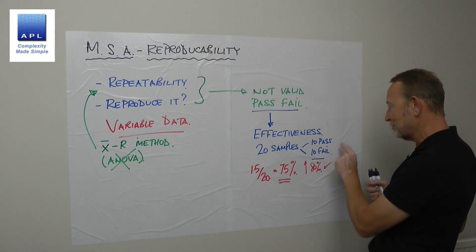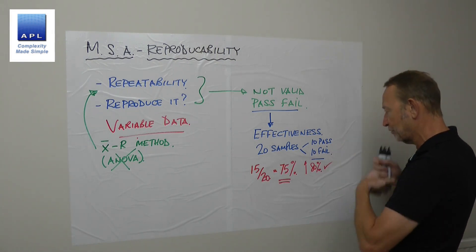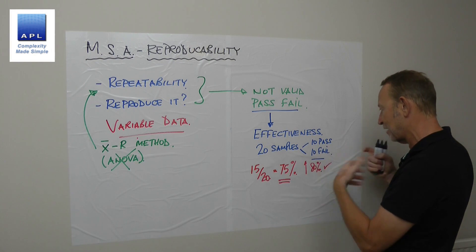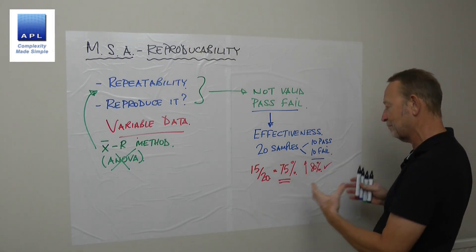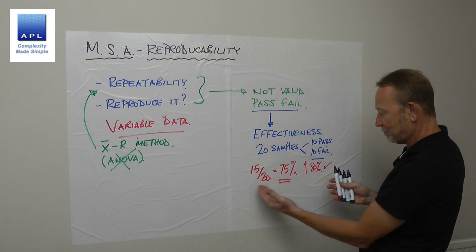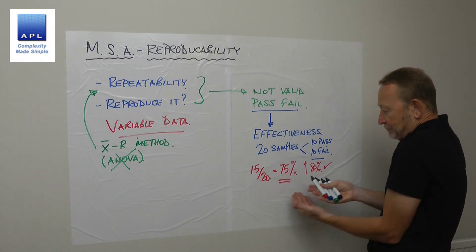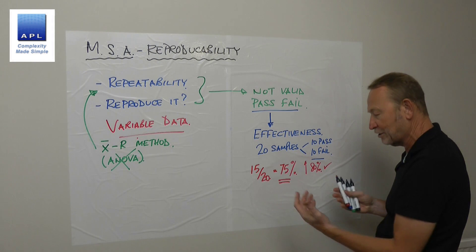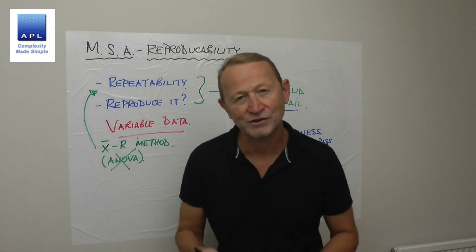It's crucial that you use 10 passes and 10 fails — samples you've definitely verified. Inspect them, then give them to the measurement system and work out the effectiveness. It's like a little test: if it gets 15 out of 20, it scores 75%.